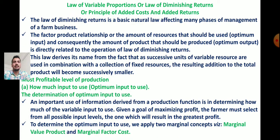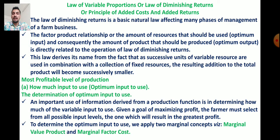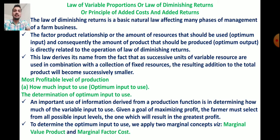Now we will look at the first principle — the Law of Variable Proportion or Law of Diminishing Returns, also known as the principle of added cost and added return. This law is a basic natural law affecting many phases of management of the firm business. The factor-product relationship, and the amount of resources used — that is, optimum input — and consequently the amount of product produced — that is, optimum output — are directly related to the operation of the law of diminishing returns.